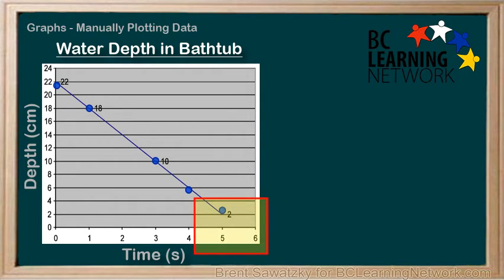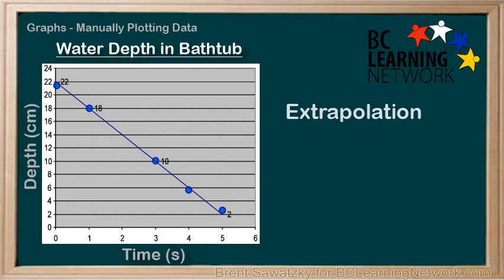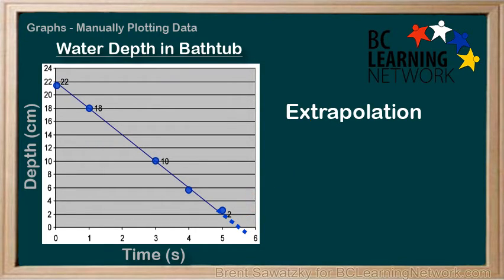Looking over here, we can see that there is no x-intercept shown, so we know that the depth never gets to zero during this data collection. Now, if we were to guess how long it would take for the tub to be totally empty, we can use extrapolation. This extends the line a bit further down to see that it would likely take about 5.5 seconds to empty the tub, assuming this trend continues. Extrapolation is simply extending a pattern — in this case, this line — beyond the collected data points to make an estimate.